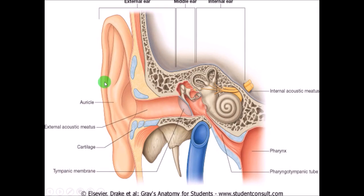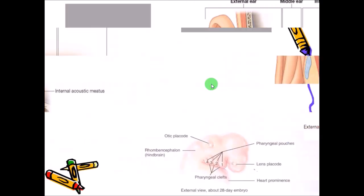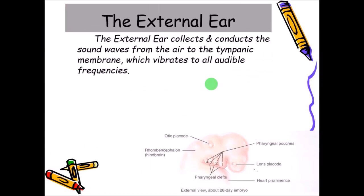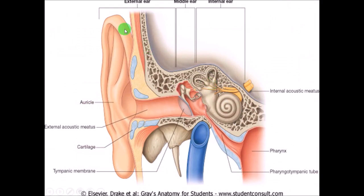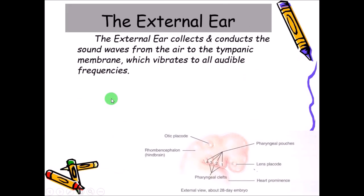Here you can see the auricle or pinna, as well as the external acoustic meatus — these together form the external ear. Then we have the middle ear and the internal ear. The external ear is a very important structure for the collection and conduction of sound waves traveling in the air, and they will be transmitted to the tympanic membrane.